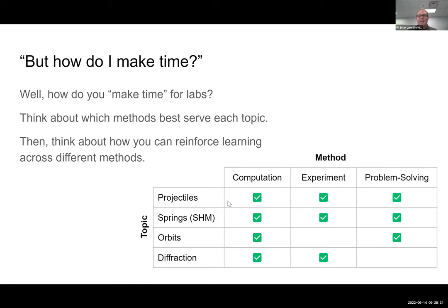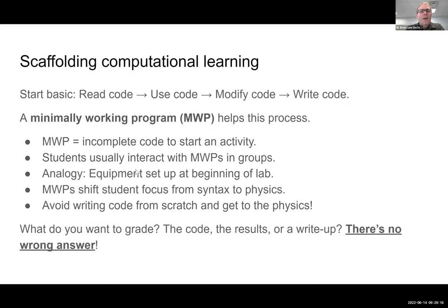When I'm designing my physics courses, I think through which methods best serve each topic. For projectile motion, I can check all three boxes: computational, experimental, and problem-solving activity. Same thing with springs — you can get a nice consistent solution across all three methods. But when I teach planetary orbits, I can't really do an experiment with that, so I focus on a computational model and problem solving. When I talk about diffraction, I'm going to send them to the experiment and to a computational model to really compare those two together rather than solving a relatively simplistic equation.